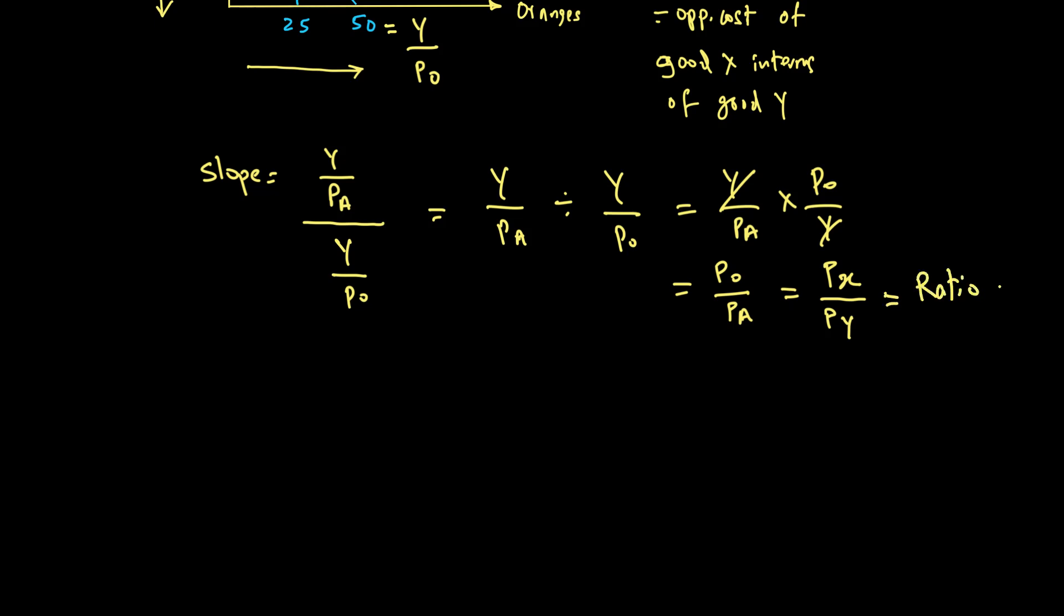So the slope of the budget line is simply the ratio of prices, PX over PY. This is useful because when we find our maximum possible satisfaction, this information will help us generate a point which incorporates the ratio of prices. The slope of the budget line in general form is PX over PY. In the next video, we'll discuss factors that can result in a shift of the budget line, parallel or non-parallel.